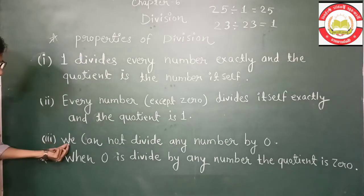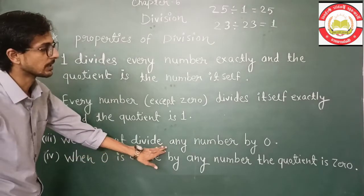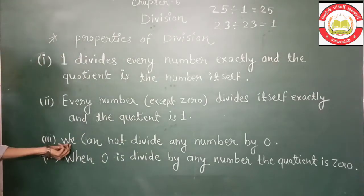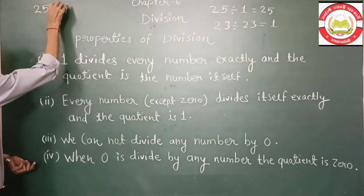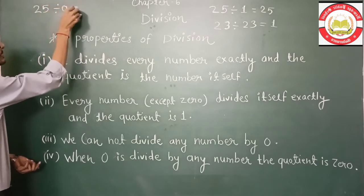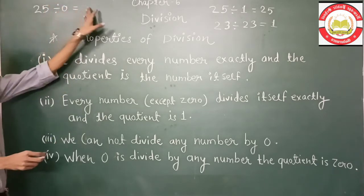Third property is, we cannot divide any number by zero. If we divide any number by zero, like 25 divided by zero, it is not possible.